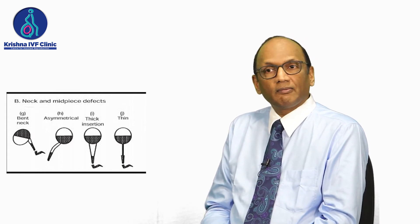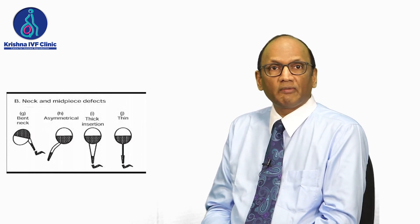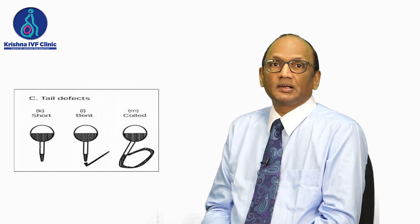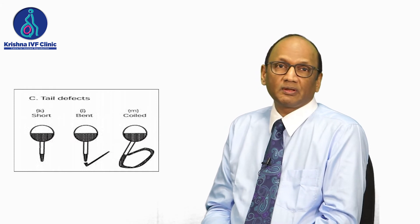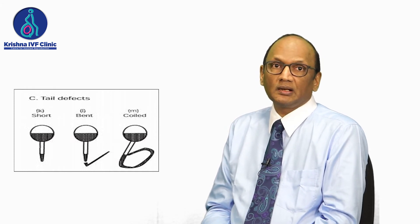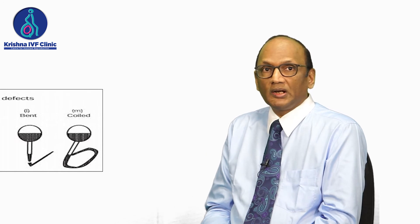These neck abnormalities can affect the ability of the sperm to swim efficiently, thereby delaying pregnancy and causing infertility. The third part is tail abnormalities, which can include absence of a tail, a short tail, or coiled tails. Sometimes a coiled tail is also referred to as a head-in-cup defect.